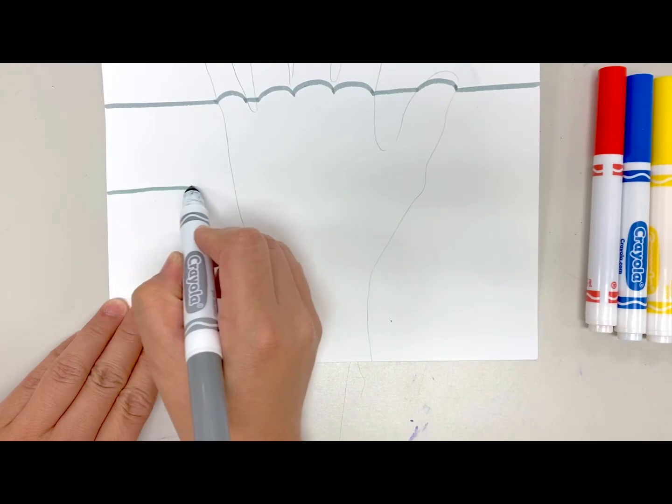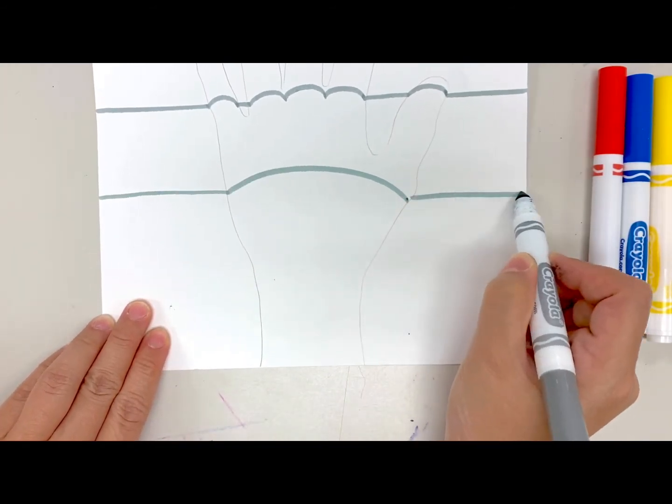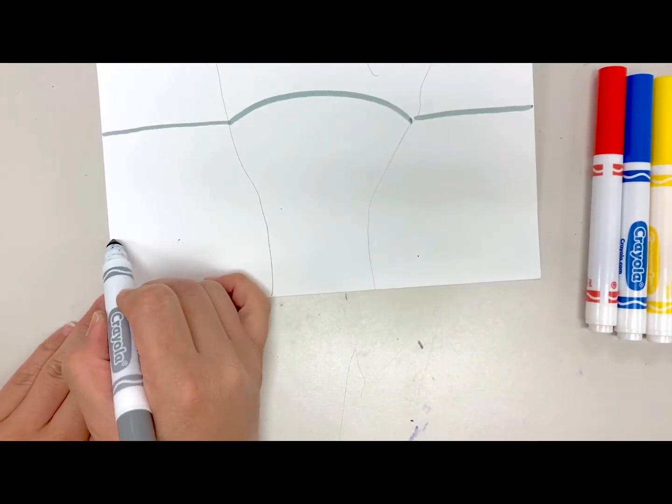For the palm of your hand, it's just going to be one big curve. And same thing for the wrist.